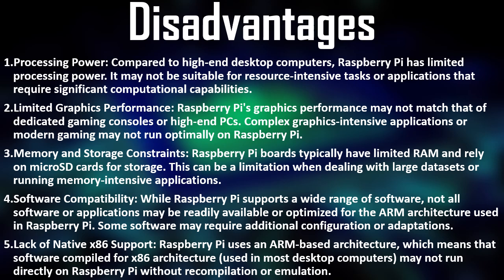Next, memory and storage constraints — Raspberry Pi boards typically have limited RAM and rely on microSD cards for storage. This can be a limitation when dealing with large datasets or running memory-intensive applications. Next, software compatibility — while Raspberry Pi supports a wide range of software, not all software or applications may be readily available or optimized for the ARM architecture. Some software may require additional configuration or adaptations. Lastly, lack of native x86 support — Raspberry Pi uses an ARM-based architecture, which means software compiled for x86 architecture used by most desktop computers may not run directly on Raspberry Pi without recompilation or emulation.